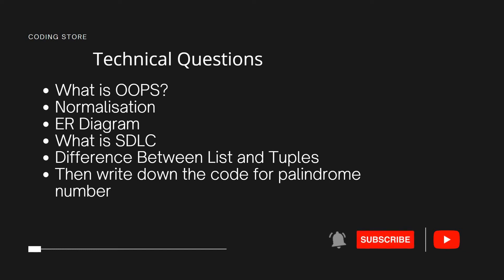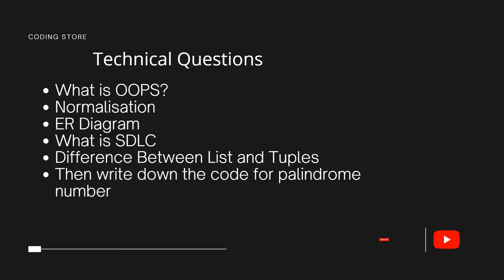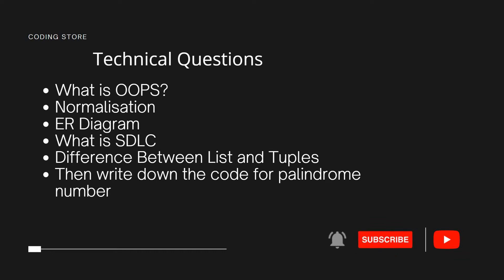First of all, introduce yourself. After the introduction, they ask about what is OOPS — object oriented programming. Then they ask about the four pillars of object oriented programming. The four pillars are: abstraction, inheritance, encapsulation, and polymorphism. You should know about these concepts and how to code for all four of them.